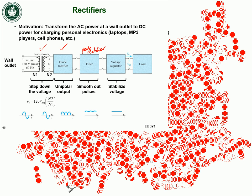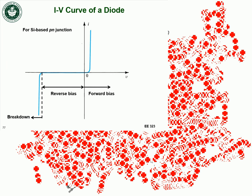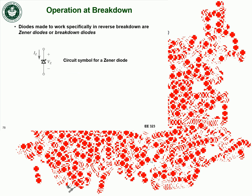We're going to look at a way to create a voltage regulator using only diodes. But first, let's go back to the diode IV curve. We talked about forward bias and reverse bias operation, and so far we said breakdown is bad. However, there are diodes specifically designed to operate in breakdown — they're made for it. These are called Zener diodes or breakdown diodes. Their circuit symbol looks like the regular diode symbol except with two tails added, which sort of looks like a sideways Z.